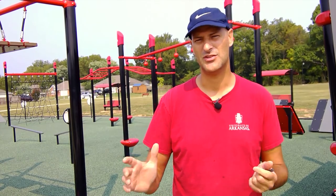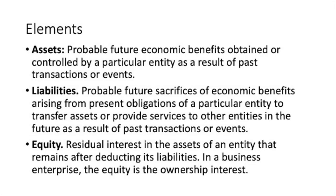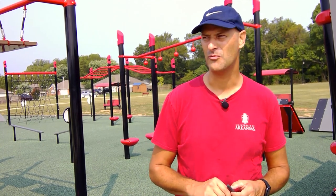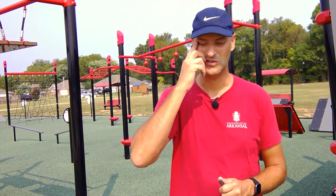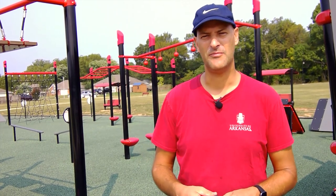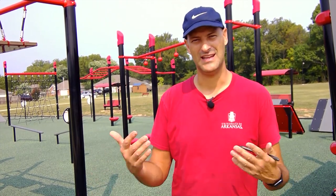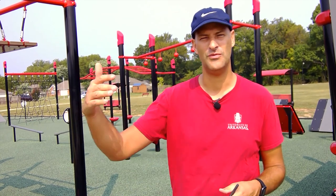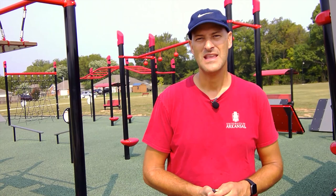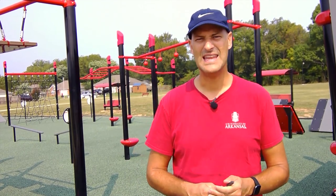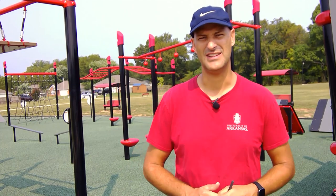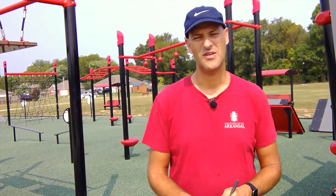Liabilities are the probable future sacrifice of economic benefits arising from present obligations. If assets are benefits, a liability is the sacrifice of those benefits. They have to arise from present obligations — this prevents us from recording uncertain future liabilities. For instance, if you have a factory on the coast that could get hurt by a hurricane, you don't record a liability until the hurricane actually occurs and creates costs. You can't have a liability for something you merely expect might happen in the future.